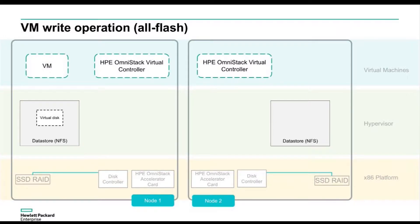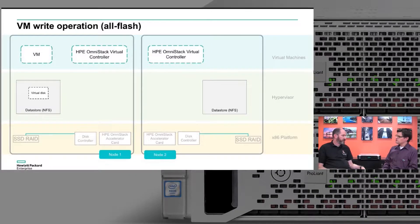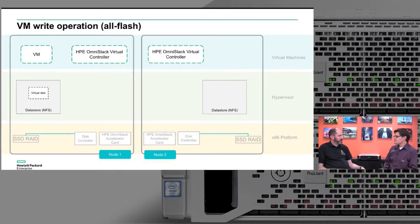That's just keeping the node up. To keep the disks available, we also use RAID — using the Smart Array controllers to protect the disks. So if we lose a disk, the RAID takes over and is able to resurrect any lost data from that perspective, giving us another layer of protection within that node.